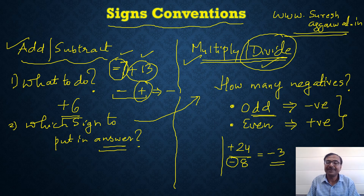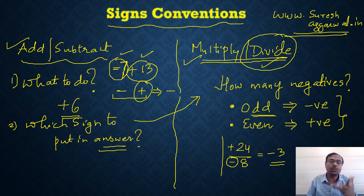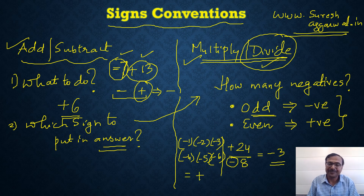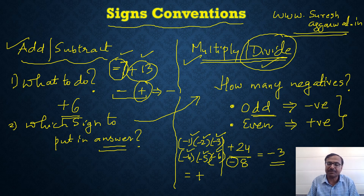When multiplying, you can have many integers — 10 to 12 at once. For example, multiplying minus 1, minus 2, minus 3, minus 4, minus 5, minus 6: count the negatives — there are 6, which is even, so the answer is positive. Then multiply the whole numbers: 1×2=2, 2×3=6, 6×4=24, 24×5=120, 120×6=720. So the answer is plus 720.